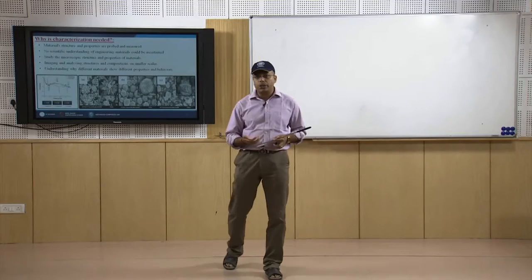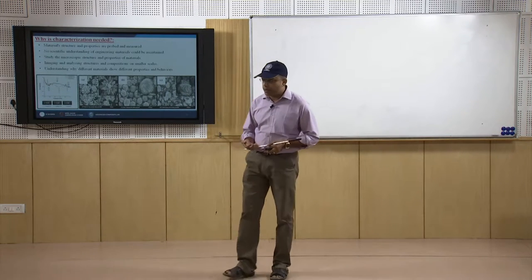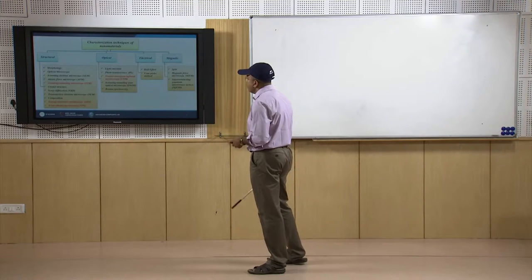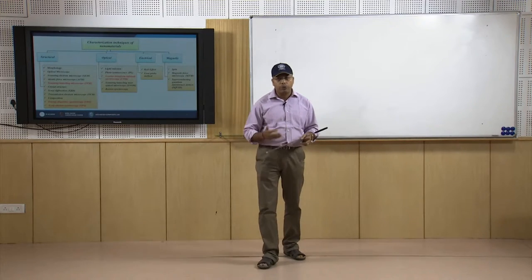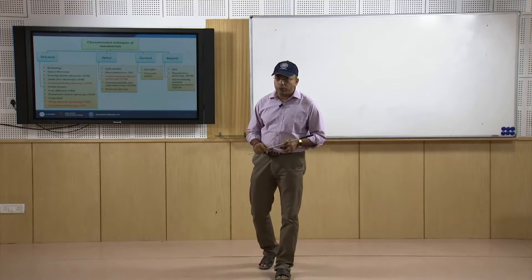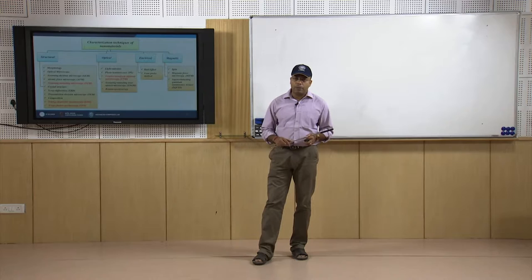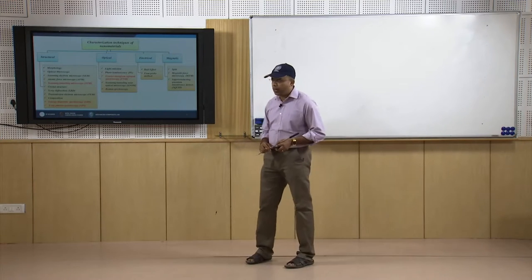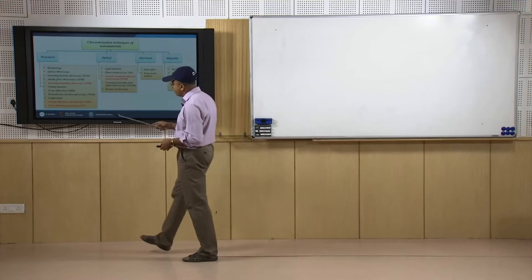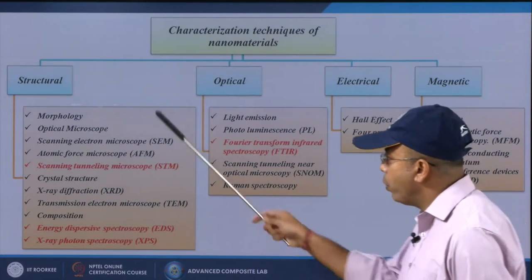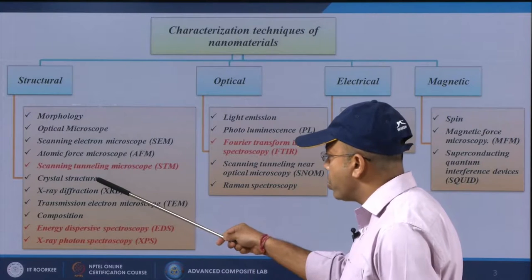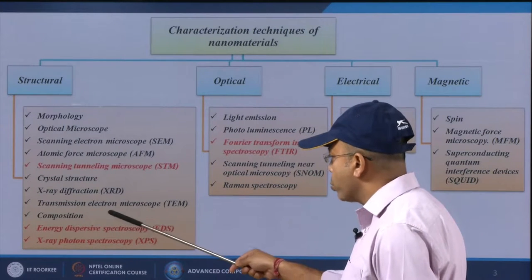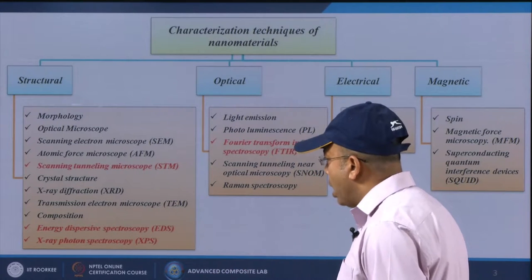Depending upon the deposition of nano particles onto the substrate, they can give different properties. There are several types of characterization techniques available. When talking about structural characterization, there are many applications: morphology studied via optical microscope, scanning electron microscope, atomic force microscope, and scanning tunneling microscope; crystal structure via X-ray diffraction and transmission electron microscope; and composition — what is the composition of this particular coating material.